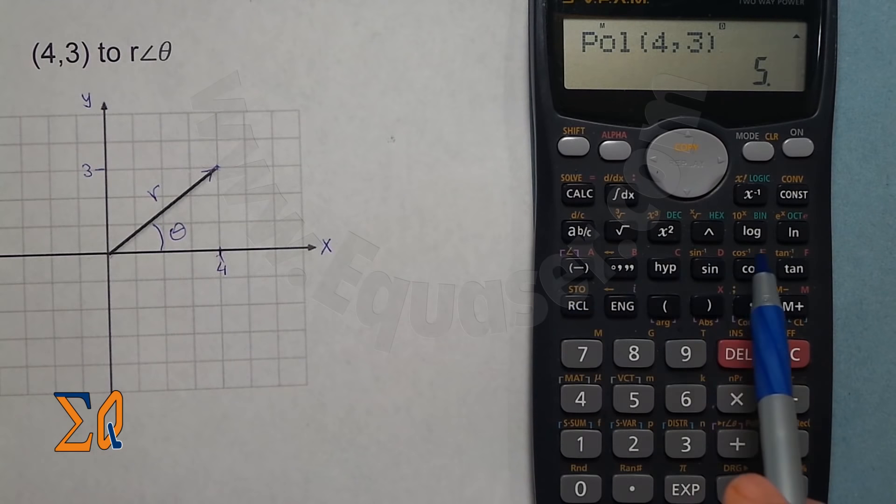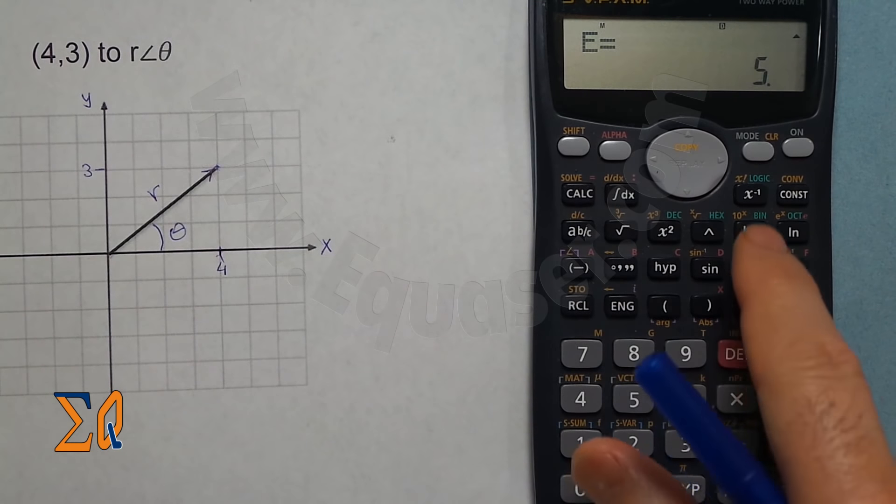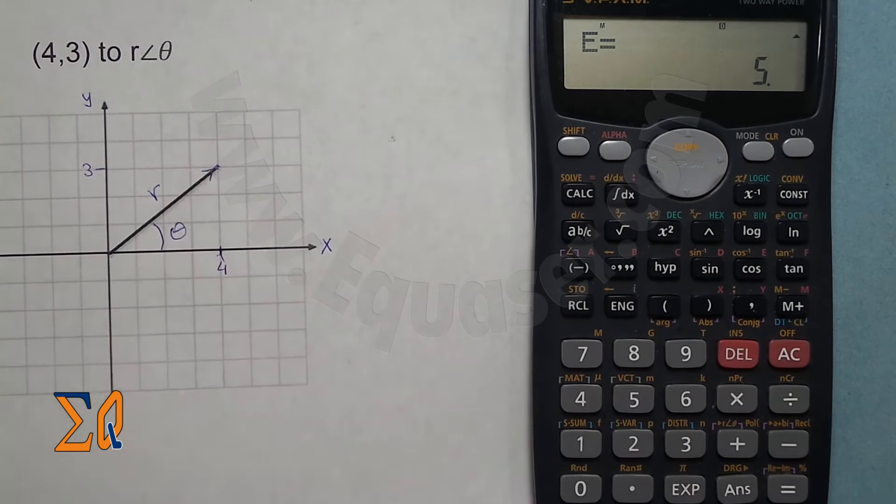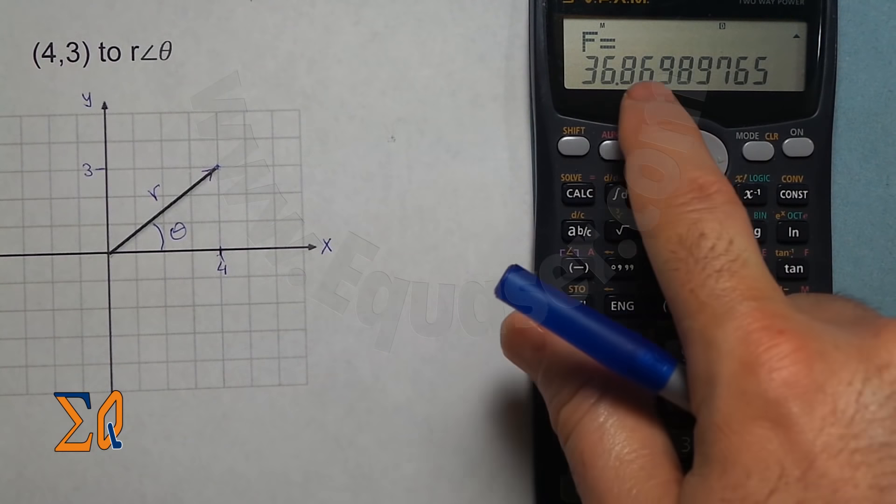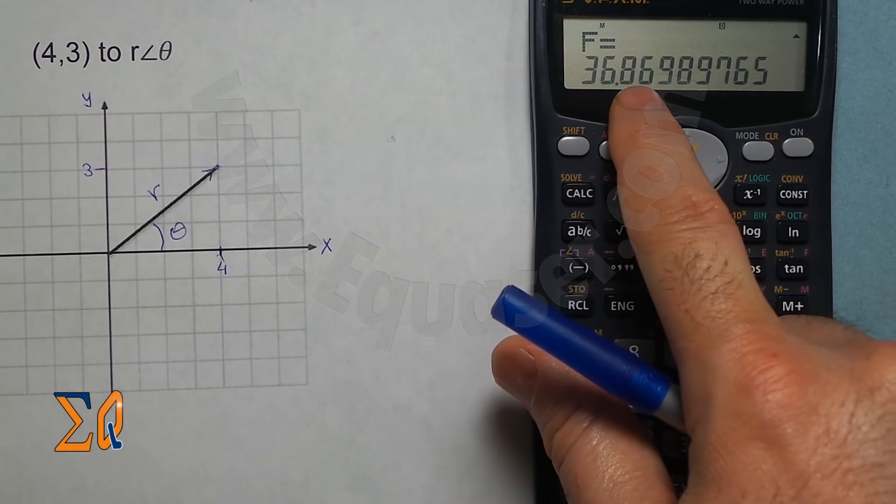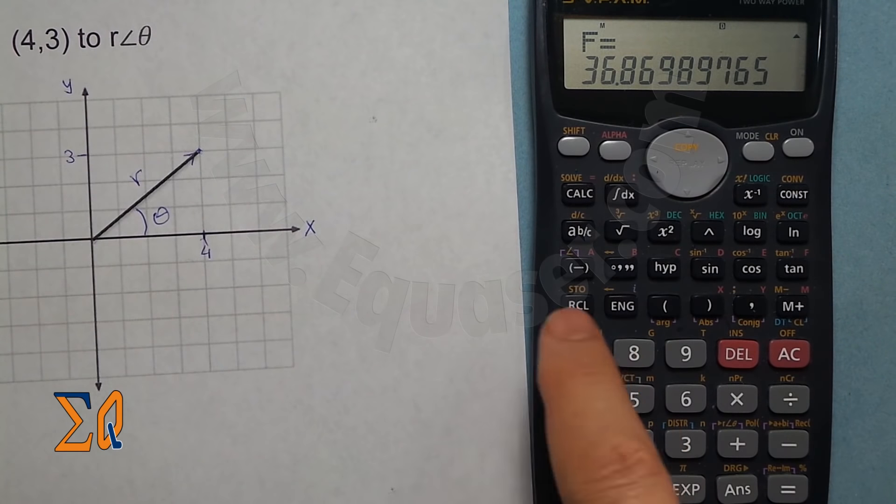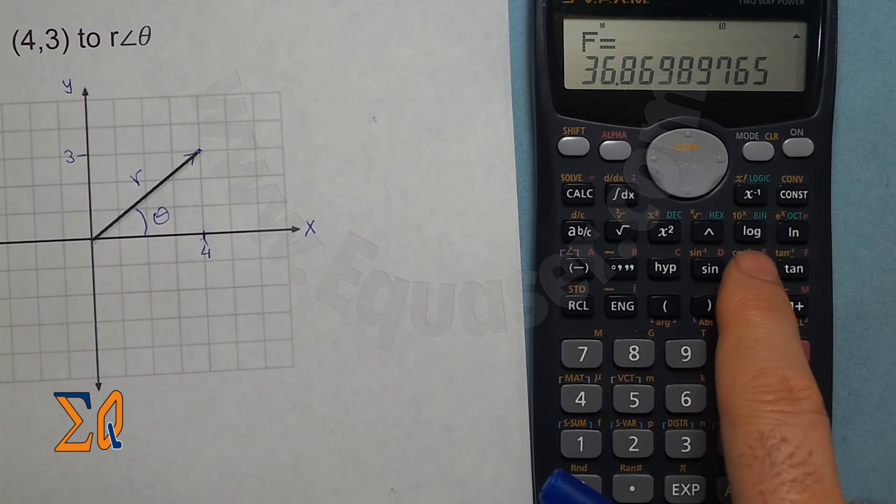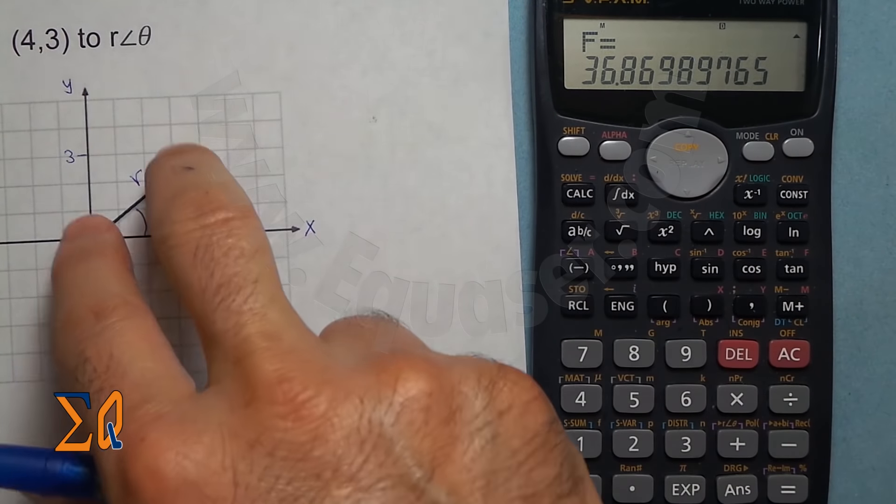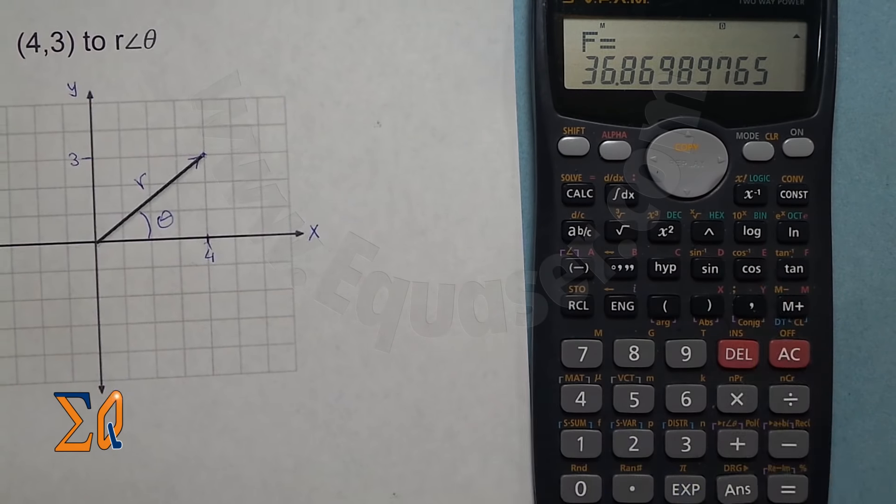I use recall E, so that is giving you the R. And recall F will give you the angle, so that's 36.8 degrees. Press recall E for the magnitude, and recall F gives you the angle value.